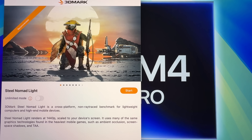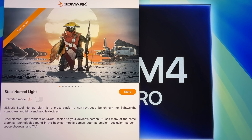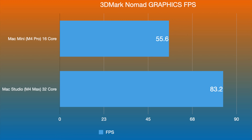In 3DMark Nomad Lite, the Mac Mini M4 Pro with 16 GPU cores scored 55.6 frames per second. The Mac Studio M4 Max with 32 cores scored 83.2 fps. So double the cores does not equal double the performance — it's around 50% faster. That's the GPU difference you're paying $600 more for.